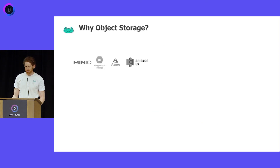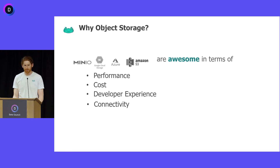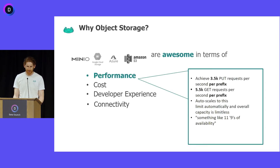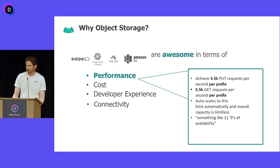So why use object storage for data, besides the fact that they are kind of meant to store data? They're pretty awesome in terms of performance, cost, developer experience, and the fact that they connect to pretty much every data tool. In terms of performance, they will automatically scale to thousands of put and get requests per prefix. The scaling happens automatically behind the scenes and gives you almost unlimited capacity. Besides some notable times like when S3 went down, they're pretty reliable and available, at least compared to anything you might self-host.